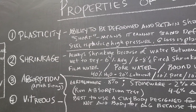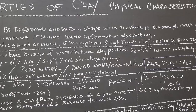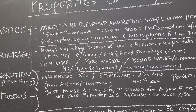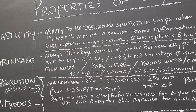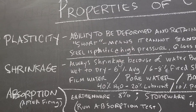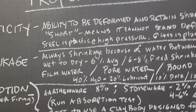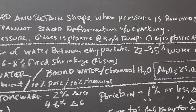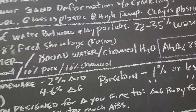Plasticity is the first thing. Plasticity means the ability to be deformed and retain that shape when under pressure — and when that pressure is removed — without cracking. If you roll out a snake of clay and try to tie a knot with it and it cracks, that means it's short. If it's real smooth and can do that, it's super plastic. We like that in throwing and hand building so that when we form something it doesn't crack. Many things are plastic — steel is plastic at high pressure, glass is plastic at high temperature — but clay is plastic at room temperature.